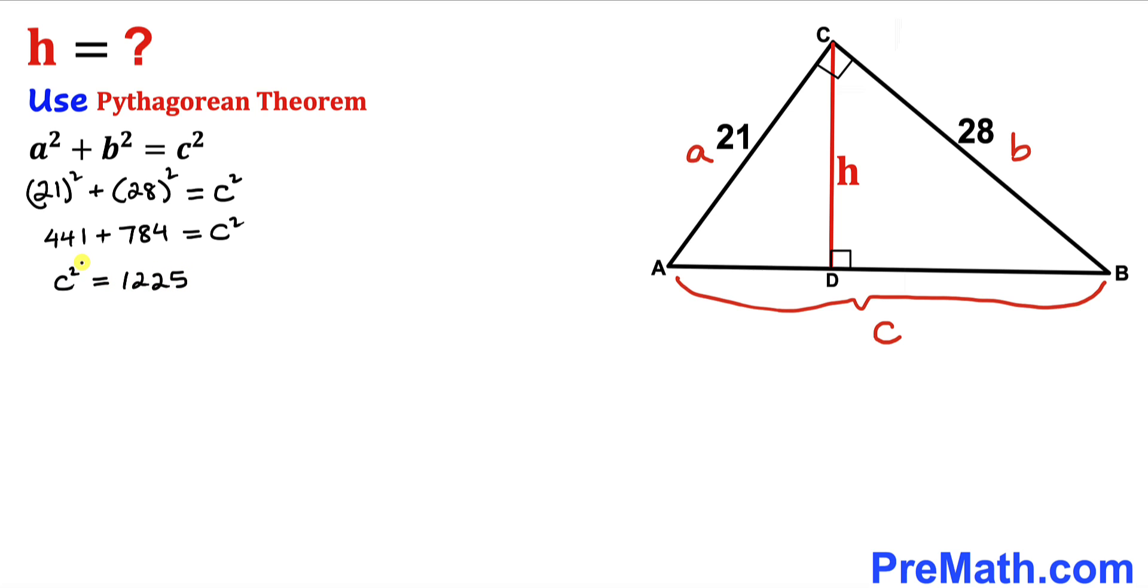Let's go ahead and undo this square by taking a square root on both sides. So our c value turns out to be 35, and we keep the positive sign since we are dealing with side length. Therefore this side length AB turns out to be 35 units, so we finally know all three sides of triangle ABC: 21, 28, and 35.